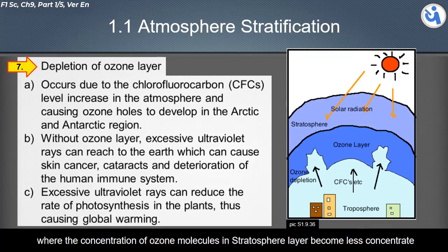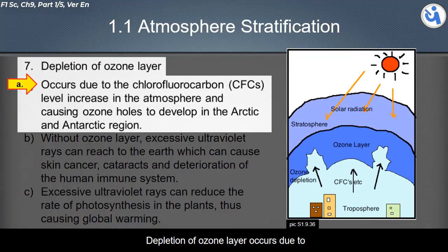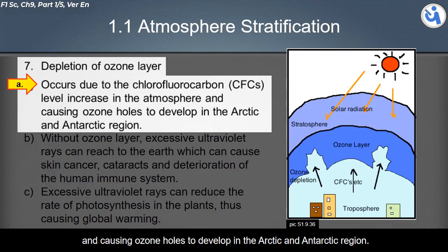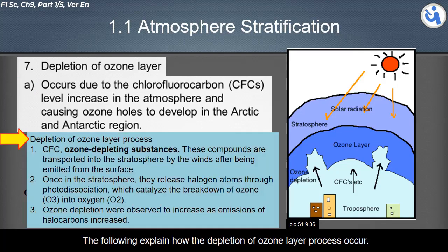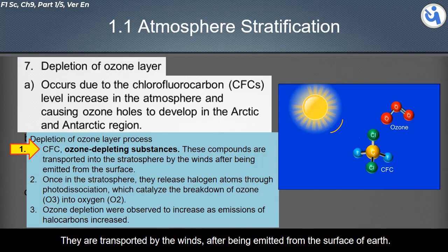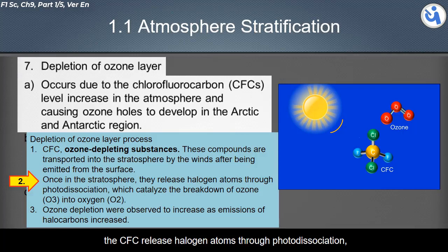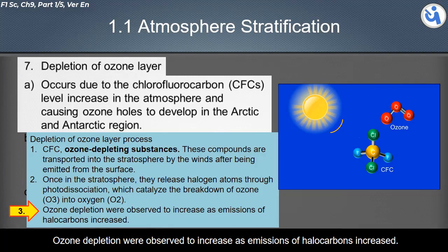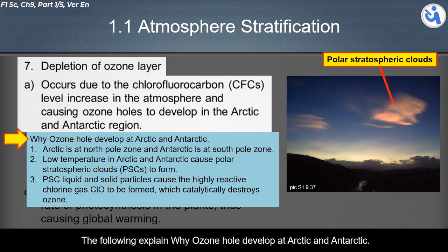Satellites are launched into orbit in the exosphere layer for telecommunication purposes. There is a phenomenon called ozone layer depletion, where the concentration of ozone molecules in the stratosphere becomes less concentrated. This occurs due to increased levels of chlorofluorocarbons (CFCs) in the atmosphere, causing ozone holes to develop in the Arctic and Antarctic regions. CFCs are transported into the stratosphere by winds, where they release halogen atoms through photodissociation, which catalyze the breakdown of ozone into oxygen.